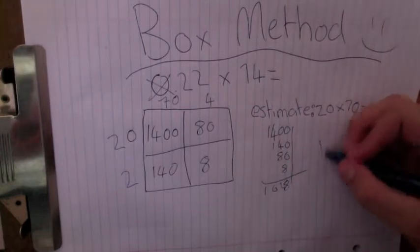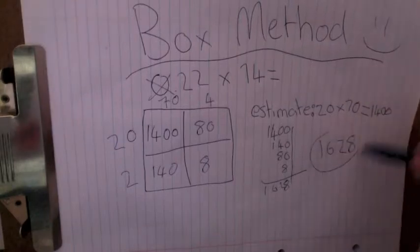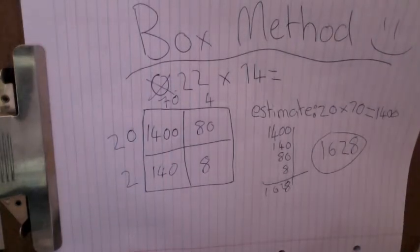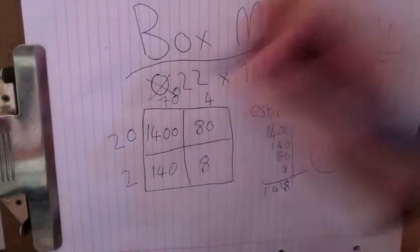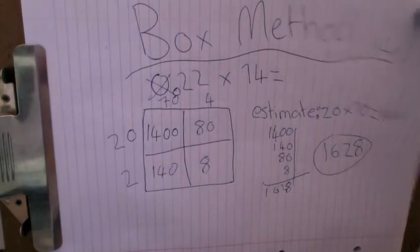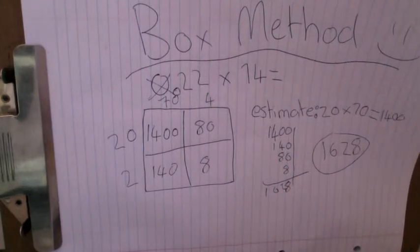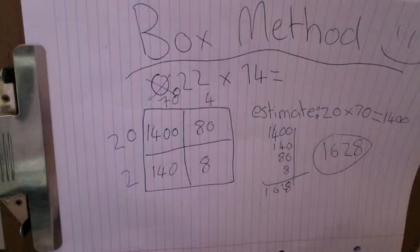So now that we have this number, that answer, we need to put that decimal point back in. So it's still a decimal answer. So we estimated 1,400. So now we need to put the decimal point in somewhere where it's going to be closest to that number.